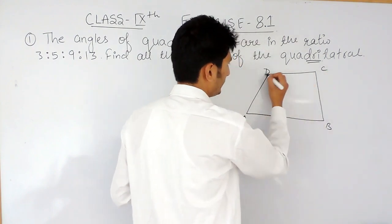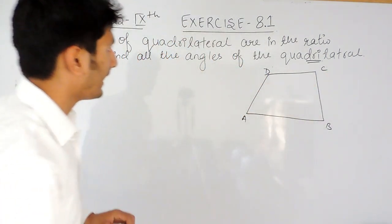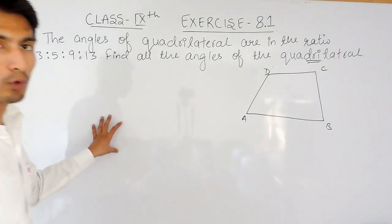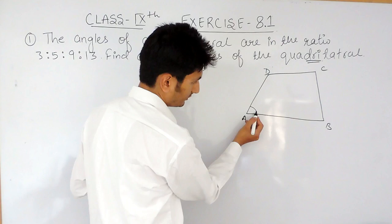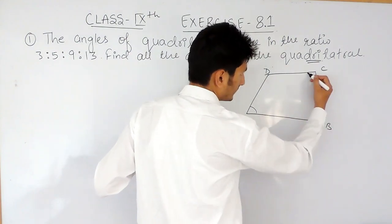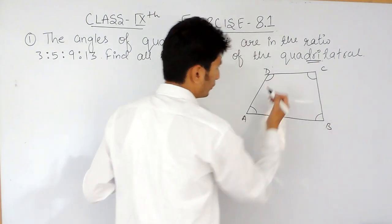If I name this ABCD and obviously there are 4 angles in this quadrilateral, this is the first angle, this is the second, this is the third and this is the fourth.